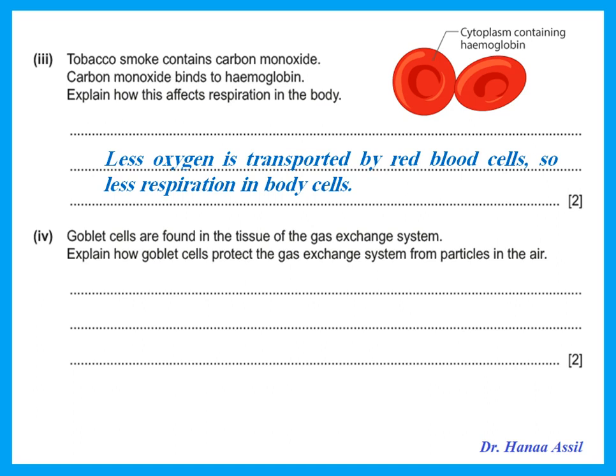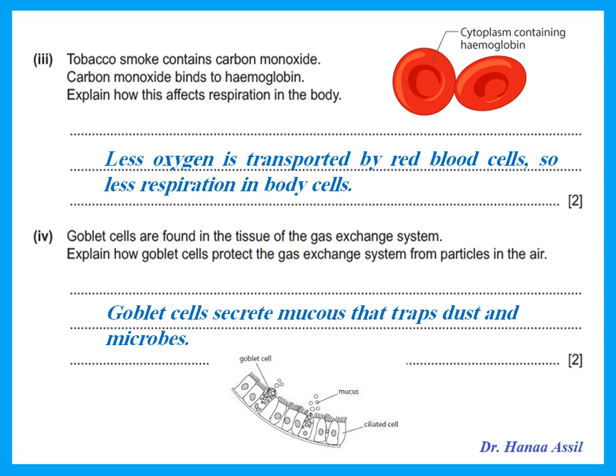Goblet cells are found in the tissue of the gaseous exchange surface. Explain how goblet cells protect the gas exchange system from particles in the air. Remember that the lining of your respiratory system has two types of cells: goblet cell and ciliated cell. The goblet cell is the one that secretes mucus. The mucus traps the dust and microbes in the air coming into the respiratory system. And then the cilia on the ciliated cells pushes the mucus out of the respiratory system.